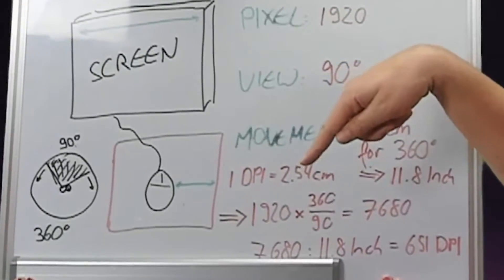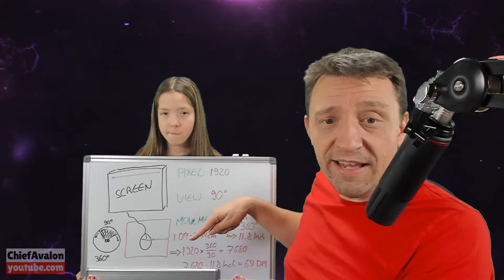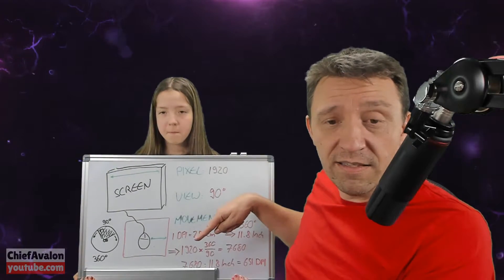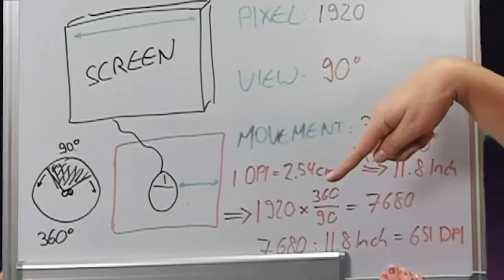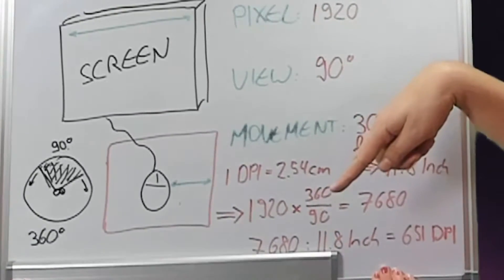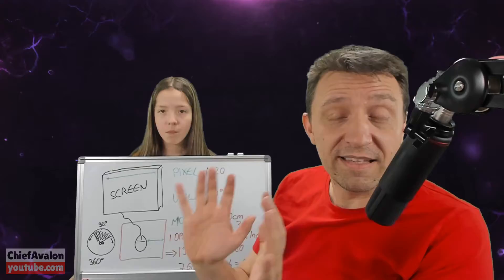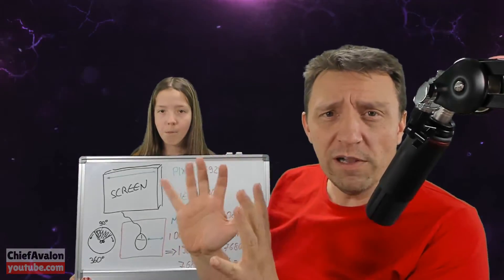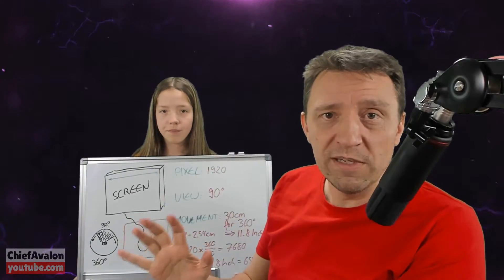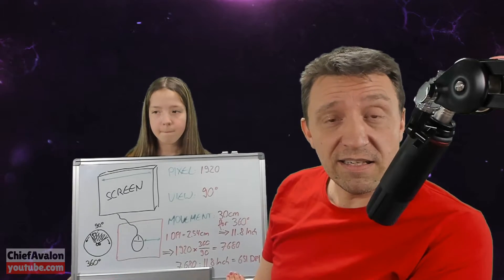Because 1 inch is 2.54 centimeters. How you calculate this is you take the 1920 pixels and multiply this with 360 divided by 90, which is basically a quarter in this example. And that gives you 7680 pixels.